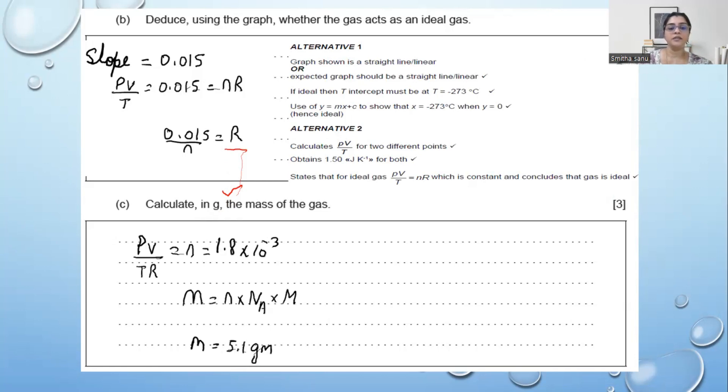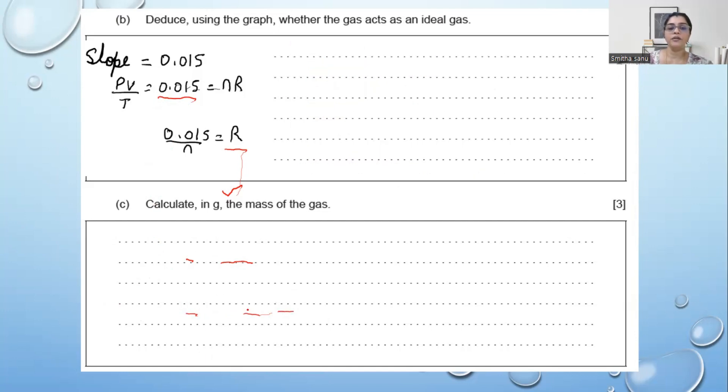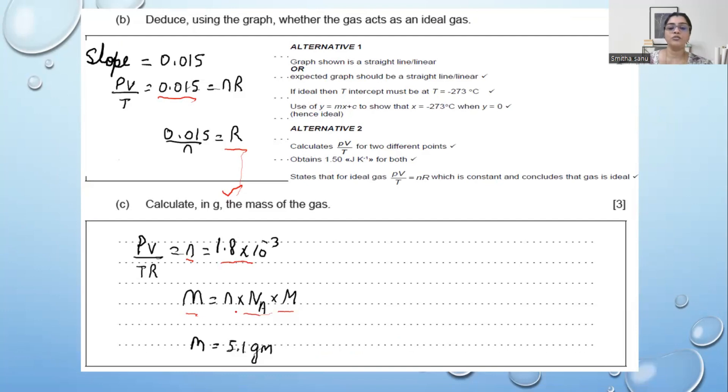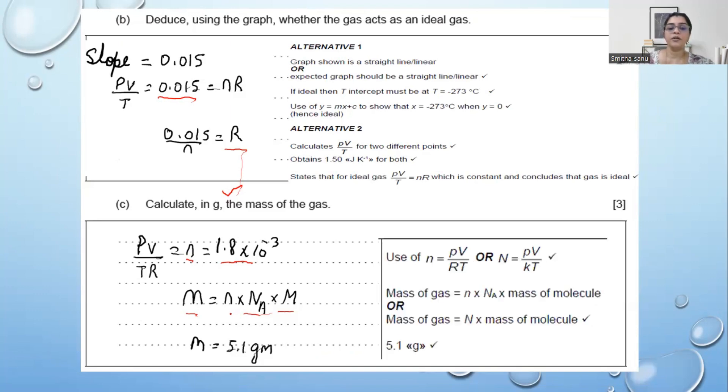Now let's go to the last sum. In the last sum, they are asking for mass of a gas. First step is PV over RT. PV over T, already you know, you can use it from the previous one, 0.015. Divide that by universal gas constant you get n. Once you get n, what do we do? We know that n times Avogadro number times the mass of single molecule gives you the mass of the whole gas. When I multiplied all the three, where m you can take it from here, 4.7 × 10⁻²⁶. Avogadro number is 6.023 × 10²³. When you multiply all this, you get the mass of the gas. It is 5.1 grams.